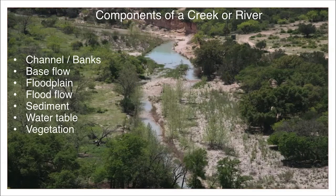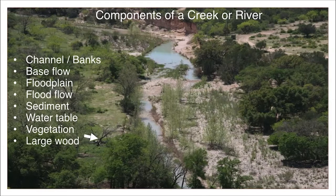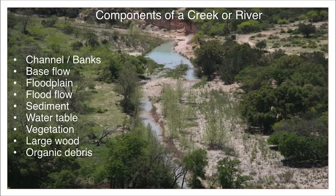The water table connected to a creek or river is referred to as an alluvial aquifer. Vegetation plays a key role in the riparian area, where certain plants are adapted to grow quite well. We also have large wood, like fallen trees, and all the other organic debris, which can include leaves, twigs, and pieces and parts of many things that were once alive.